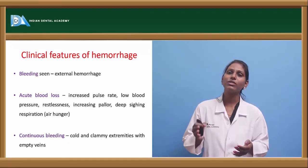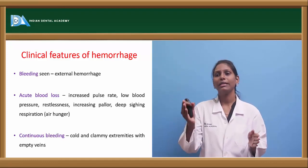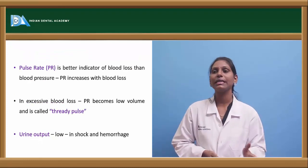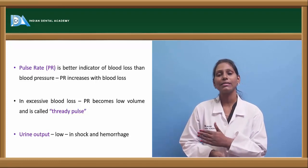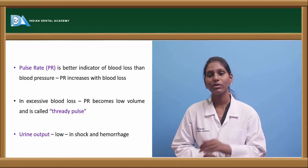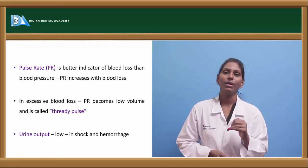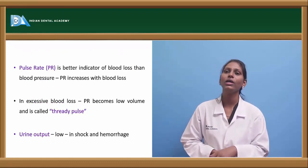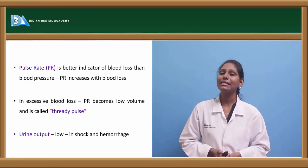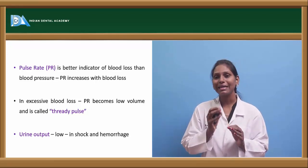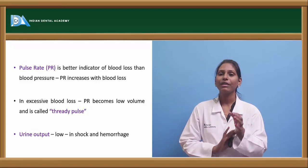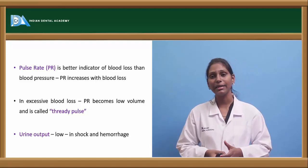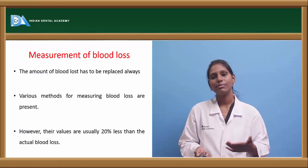With continuous bleeding, patients exhibit cold clammy extremities and empty veins. Pulse rate is a better prognostic indicator than blood pressure — pulse rate increases immediately with blood loss, whereas blood pressure remains normal at initial stages and decreases only with more blood loss. In excessive blood loss, the pulse becomes low volume with a characteristic thready pulse. Urine output is low, and the patient can enter hypovolemic shock.